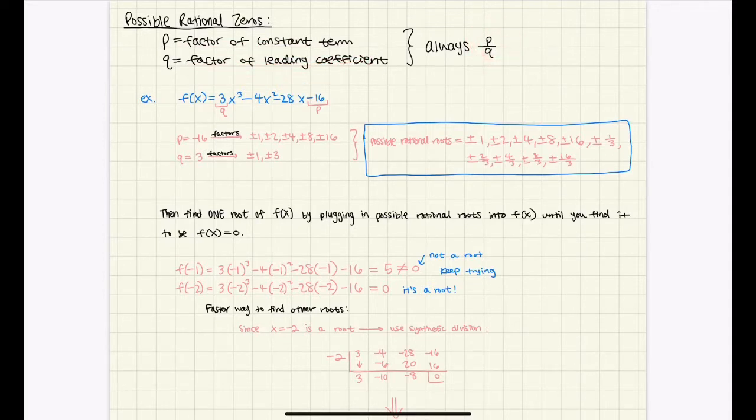So we'll go over p over q later, but if we look at this example, we can see that the p is going to be negative 16 because, as I said here, the p is the factor of a constant term. Constant is when there is no variable next to the number, and the q will be 3 because it says the q will be the factor of a leading coefficient.